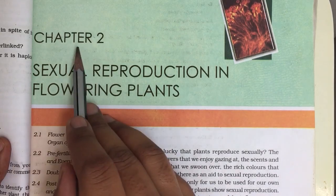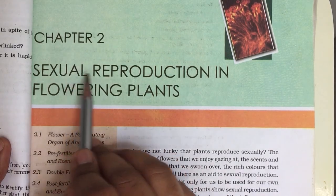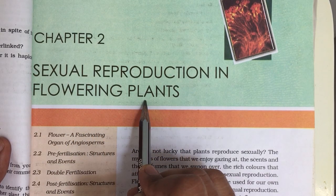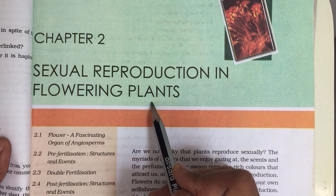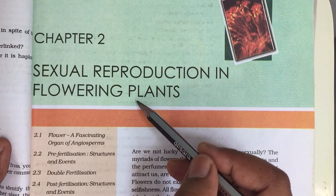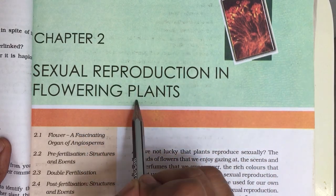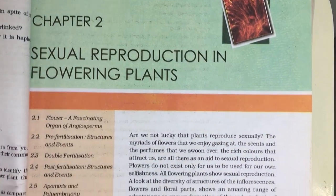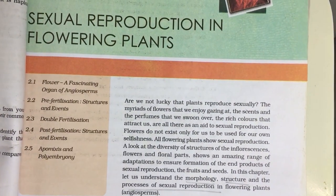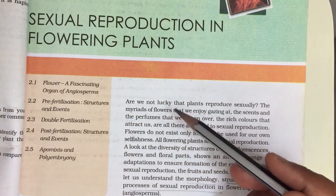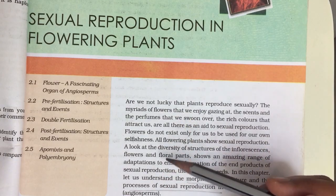Now we shall proceed with Chapter 2: Sexual Reproduction in Flowering Plants. This is a very important chapter, carrying about eight marks, and it is related to flowering plants — angiosperms. The chapter begins with an introduction part.